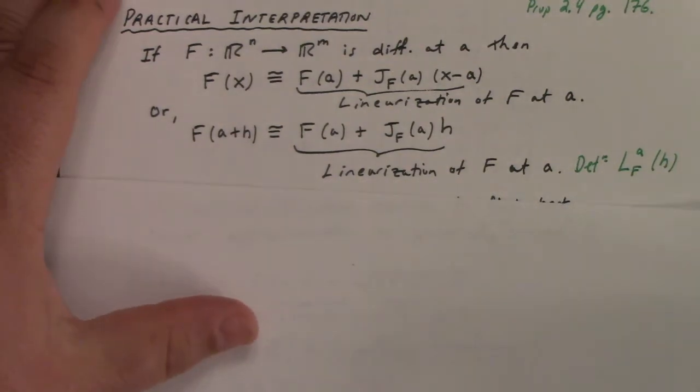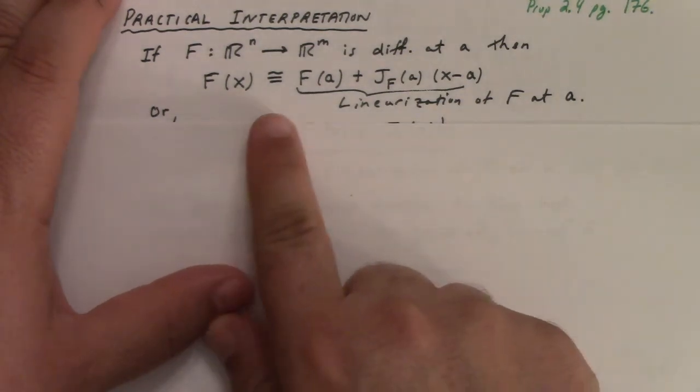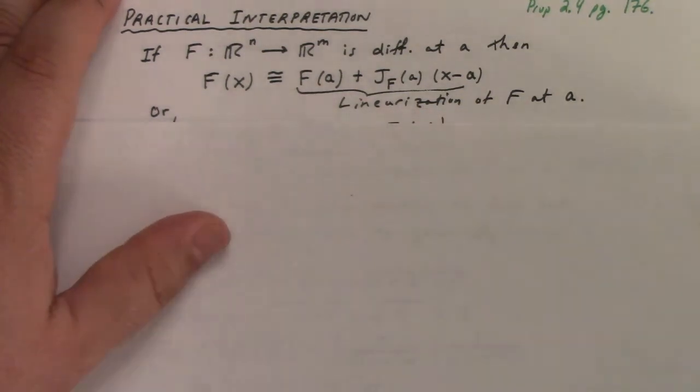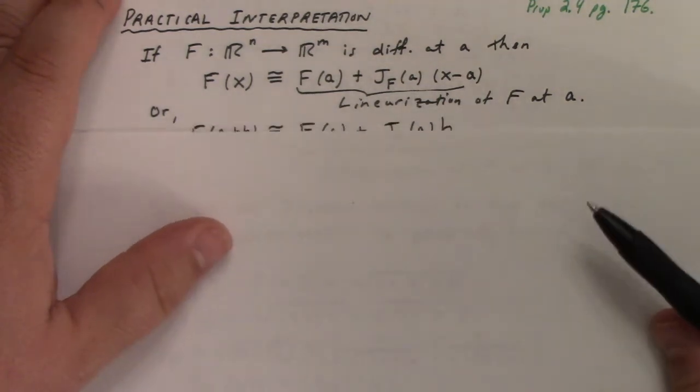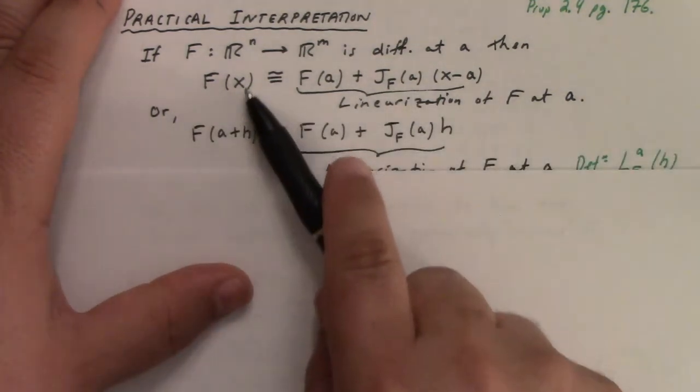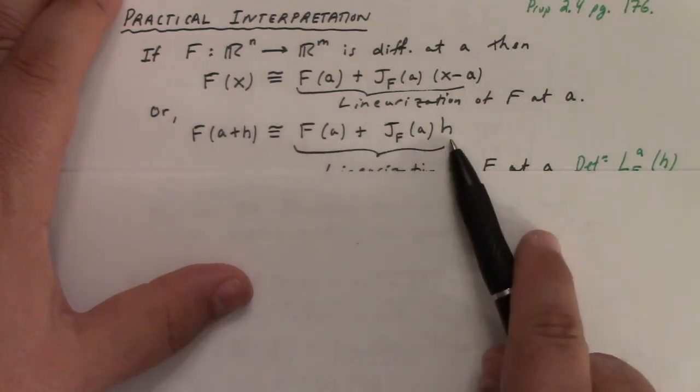So practical interpretation. If you have a function, differential at a, then you can replace the function by its linearization, which we could look at in a couple of different ways. One is like this. So we take the value plus the Jacobian at the value times x minus a, or if we want to look at it at the point shifted by h, it's the value at a plus the Jacobian of f times h.